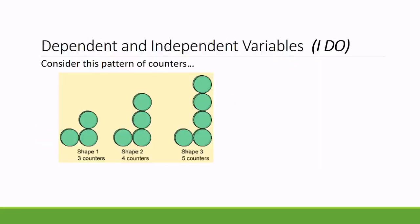Let's move on. Here's an 'I do' section — take a look at the screen as I run through some ideas about independent and dependent variables, which is very important to understand in maths and particularly in algebra. Looking at these counters: in shape number one I've laid out three counters; in shape number two I've added one more counter to the top, so now I have four; and in shape number three I've added another, making five altogether.